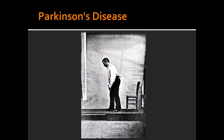What are the signs and symptoms of Parkinson's Disease? The signs and symptoms include tremors, which happen at rest and are known as pill-rolling tremors. There is also cogwheel rigidity, akinesia or bradykinesia, and postural instability.